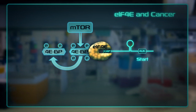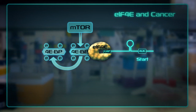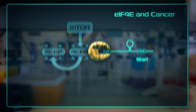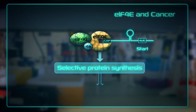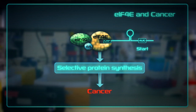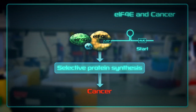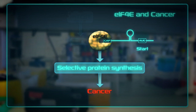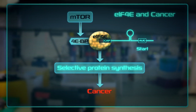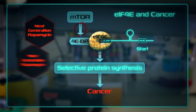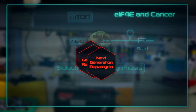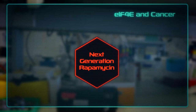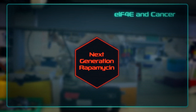The net result is more protein synthesis, which eventually leads to uncontrolled cell growth and division, that is a hallmark of cancer. Today, there are several drugs which inhibit mTOR activity, which are being tested in cancer patients to treat this devastating disease.